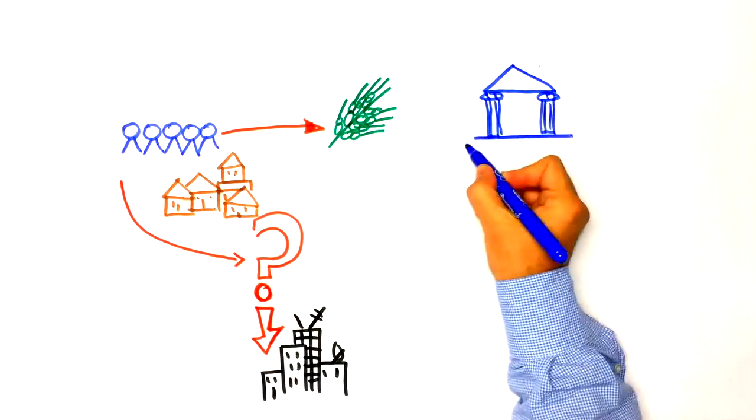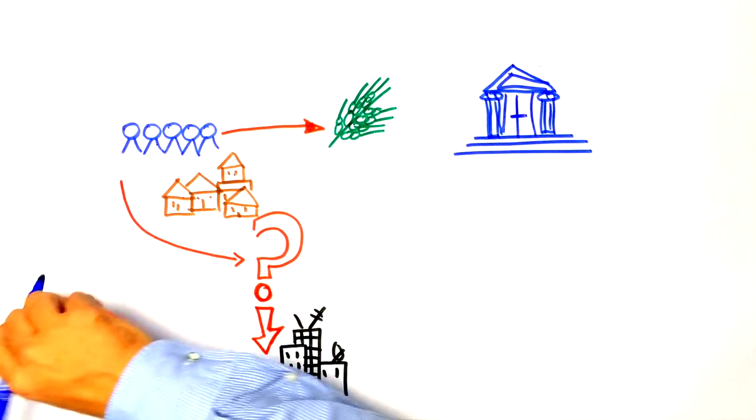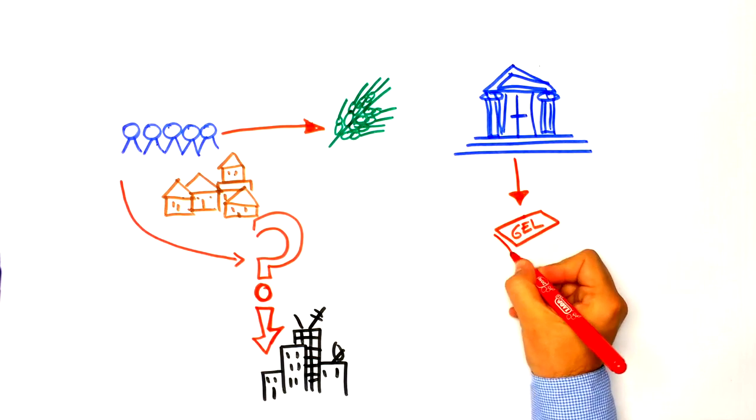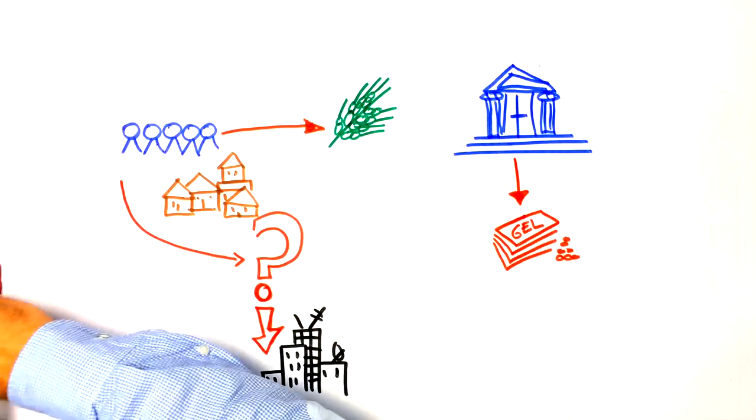The state can promote, as it is the case in the European countries, what we call rural development policies. This requires allocating financial resources for rural development.